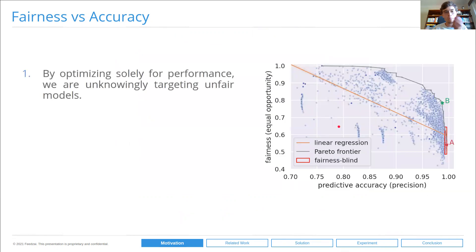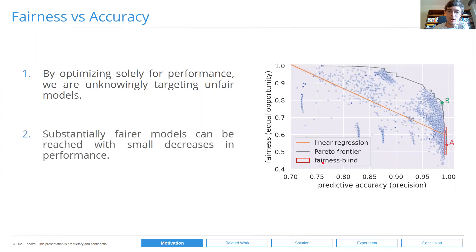So to review, by optimizing solely for performance, we are unknowingly targeting unfair models, here marked with this red rectangle. Substantially fair models can be reached with small decreases in performance. Our objective is to find this model marked with a B as well as all the other optimal balanced trade-offs between fairness and accuracy, as opposed to finding this model marked with an A that shows very low fairness.